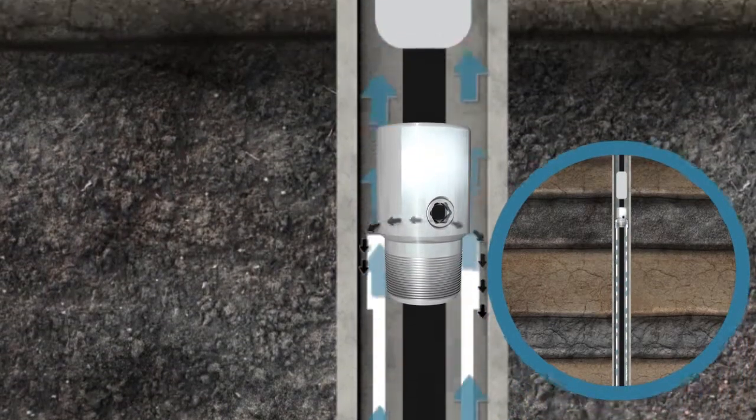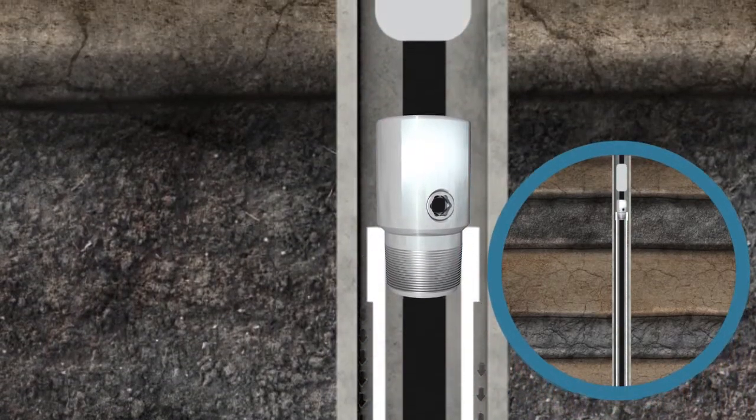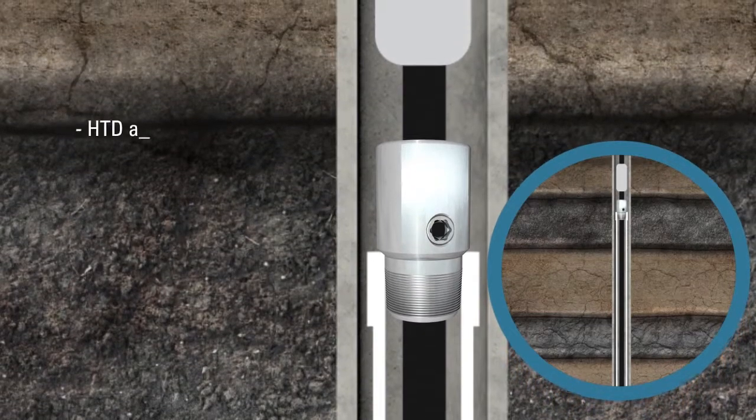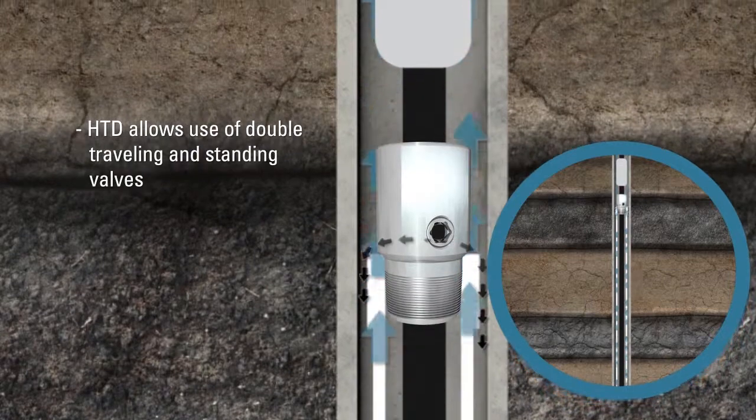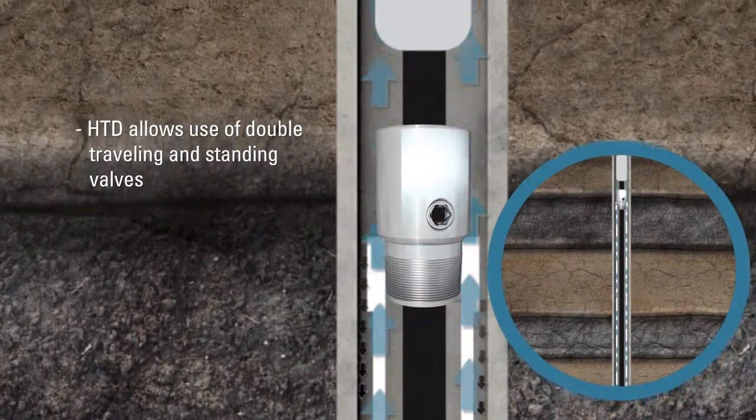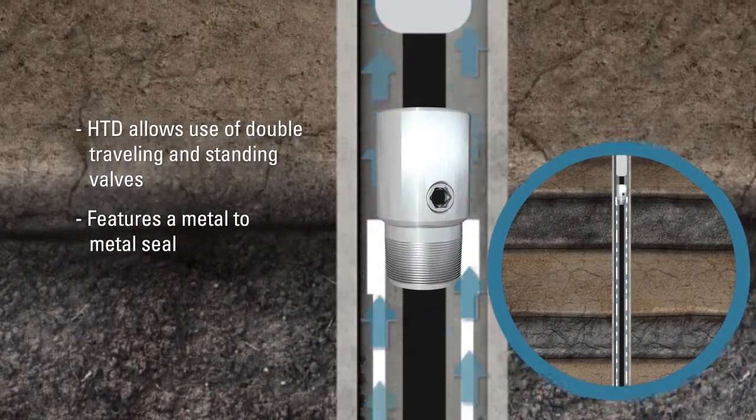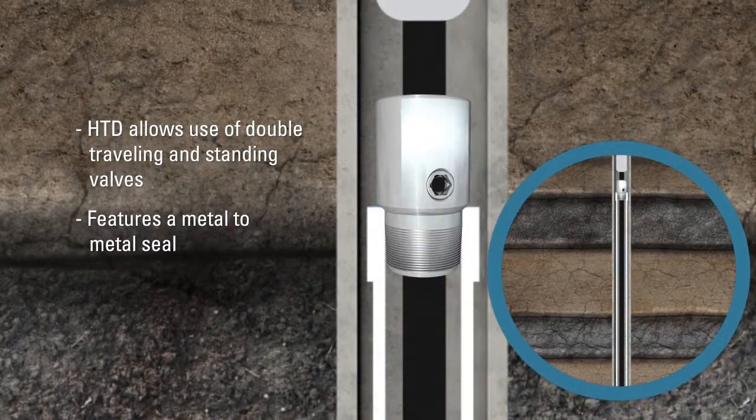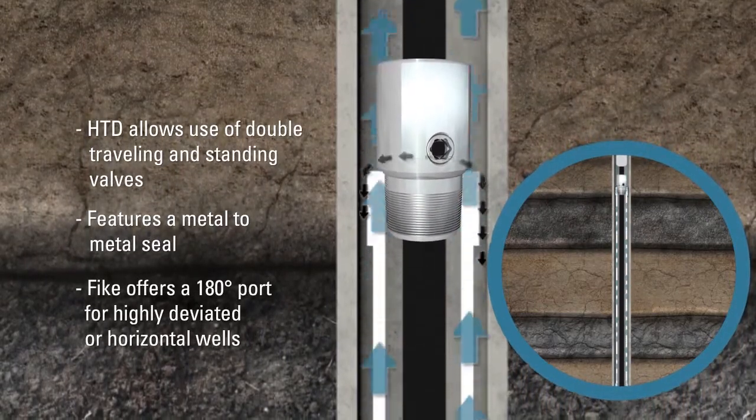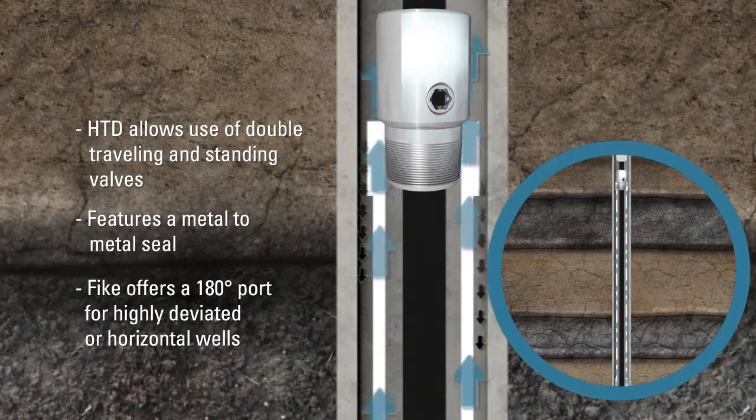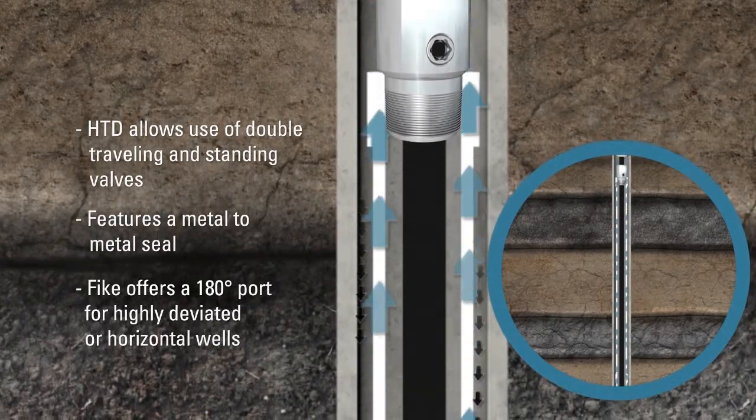The HTD allows the use of double traveling and standing valves, yet still pull dry strings. Easy to install, the HTD features a metal-to-metal seal for dependability at high pressures and temperatures. Fyke offers a 180-degree port for highly deviated or horizontal wells.